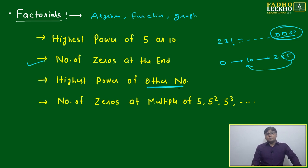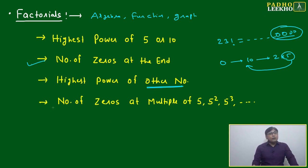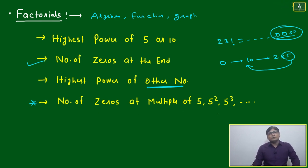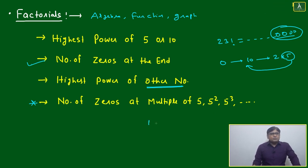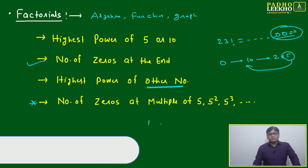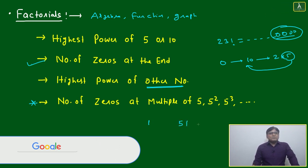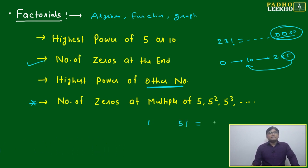When finding the highest power of a number, or comparing two composite numbers, you must be careful about how to find it. It becomes much more interesting at multiples of 5, 5², 5³ — how the number of zeros jumps. For instance, taking 1 factorial, you won't get any zeros; the minimum is 5 factorial, which gives you 1 zero.